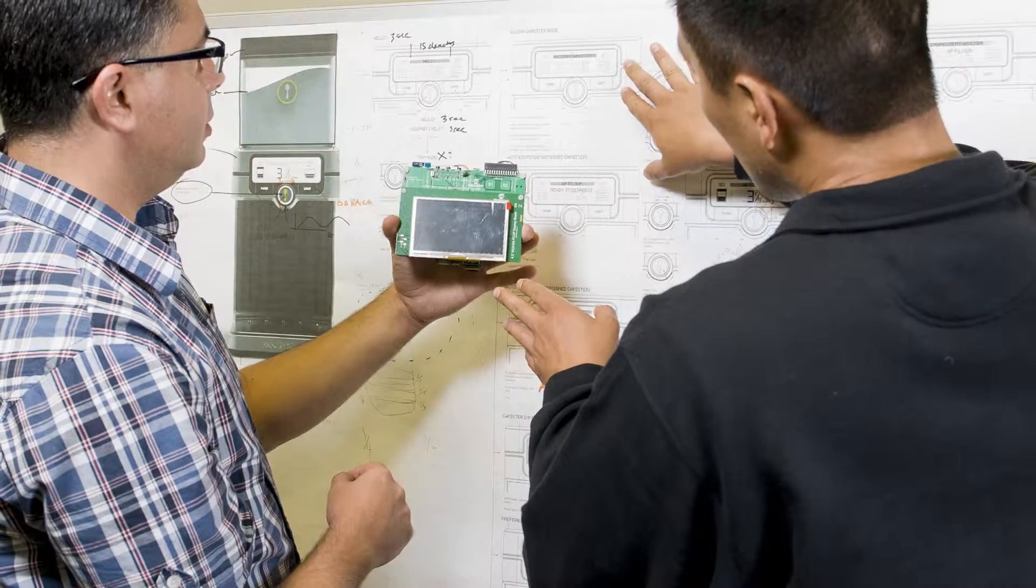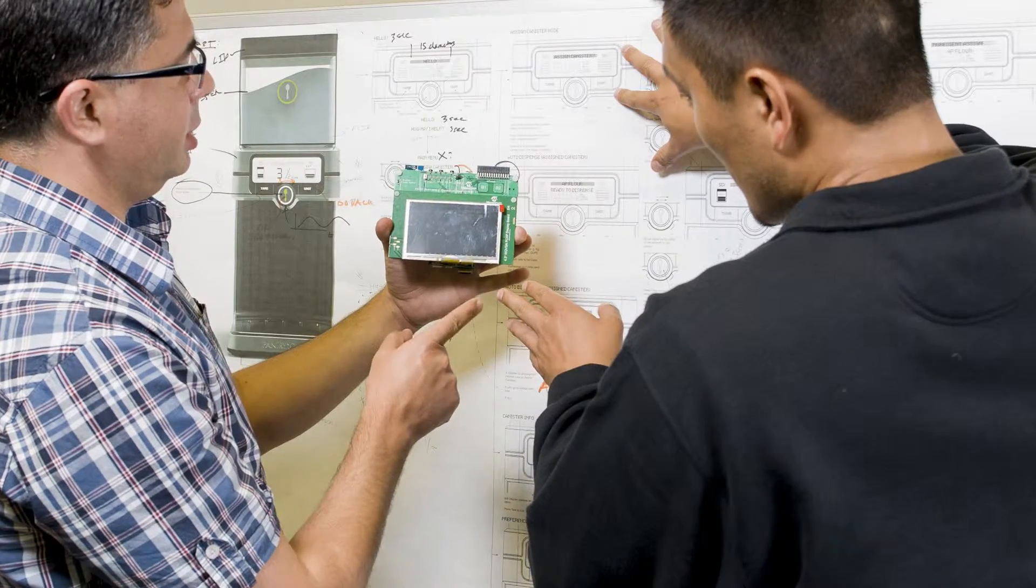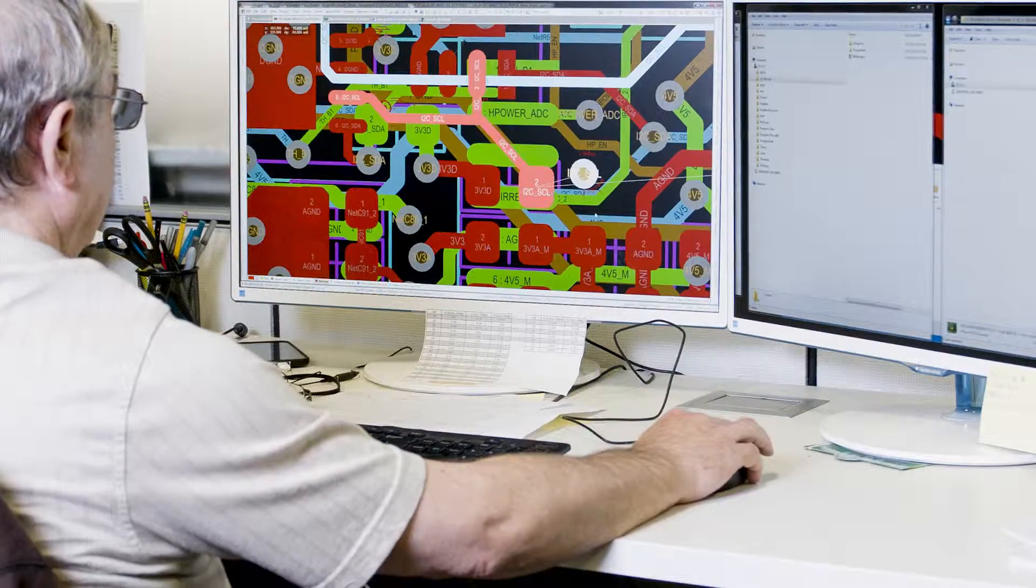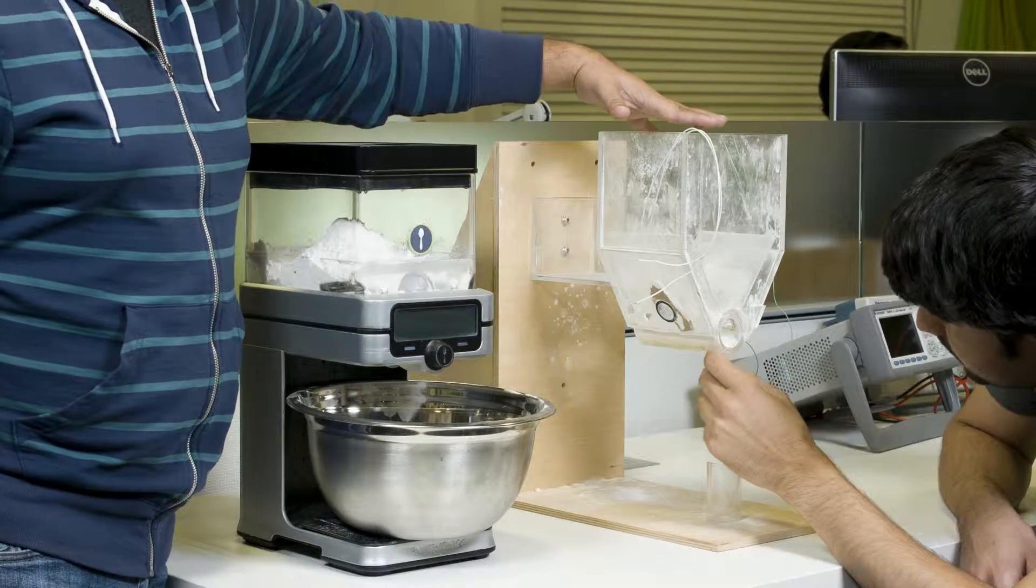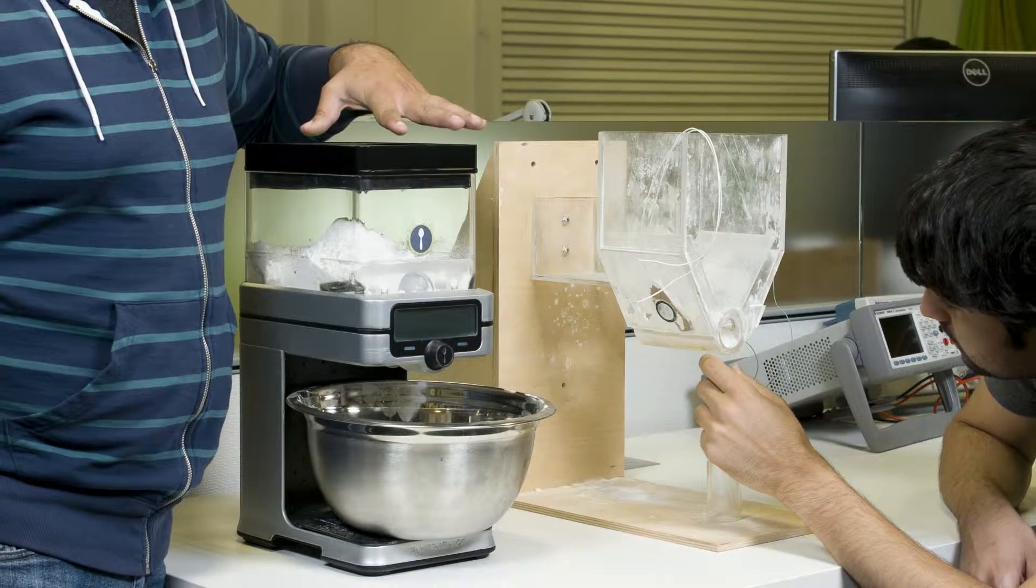The result of your functional prototype can influence the final direction of your product. For example, if your original design solution does not work as expected, engineers will use the prototype to make improvements and test design alternatives until they arrive at the right solution.